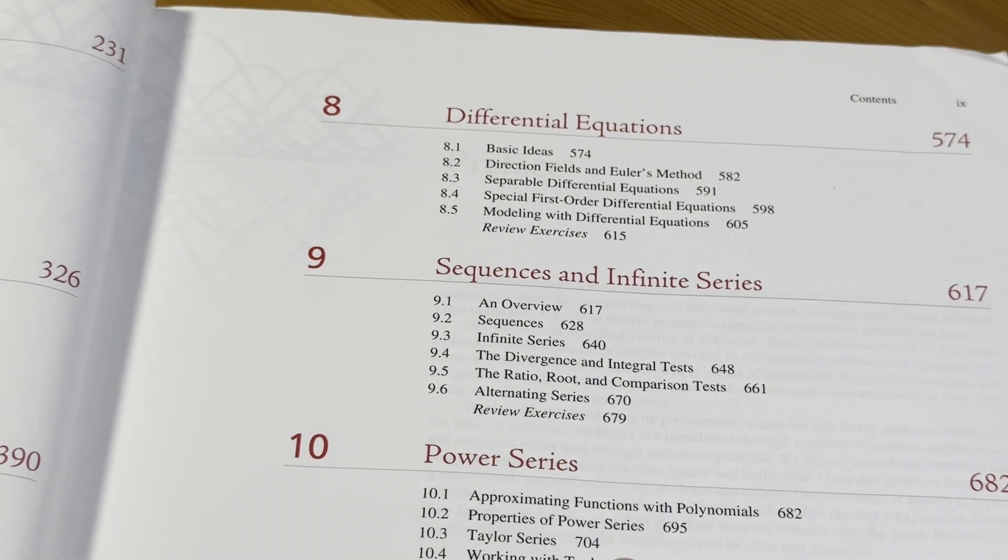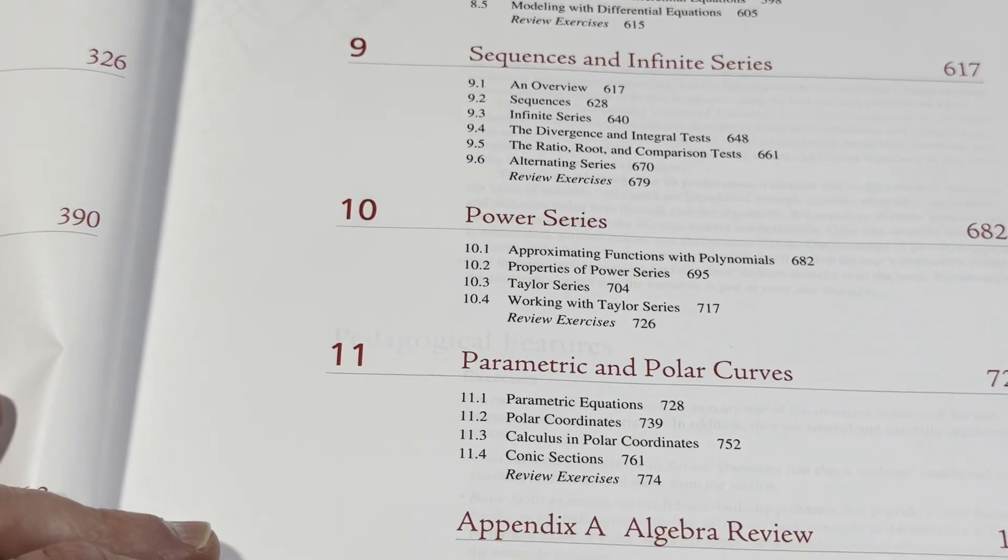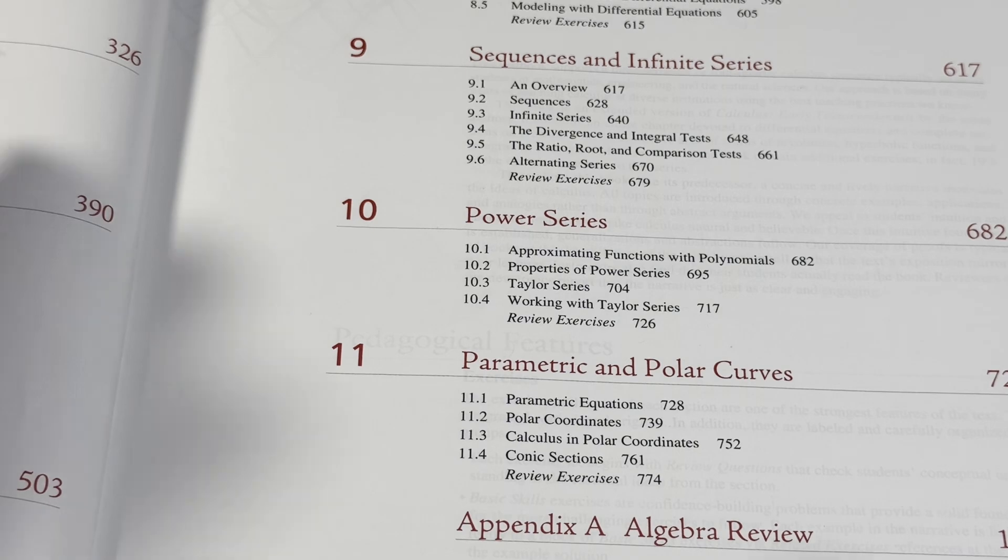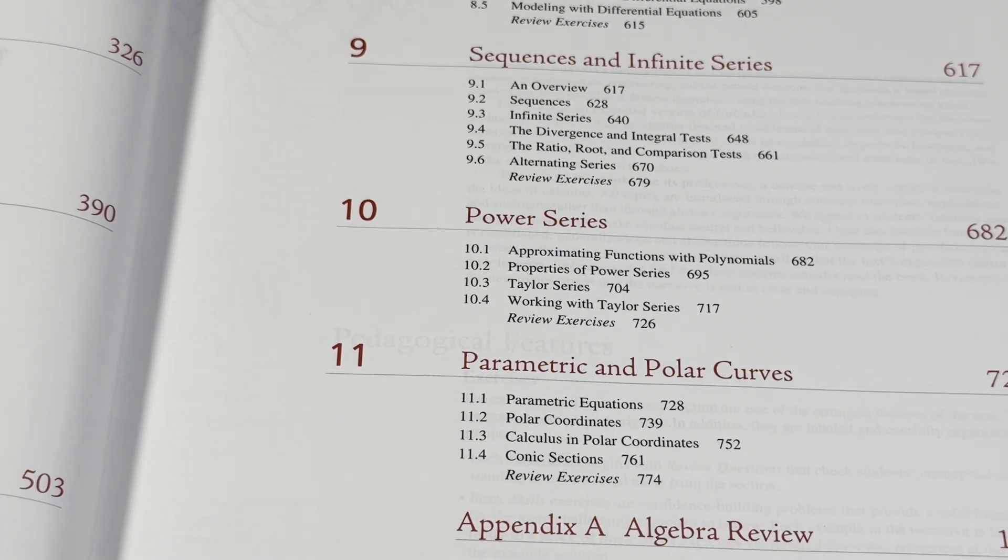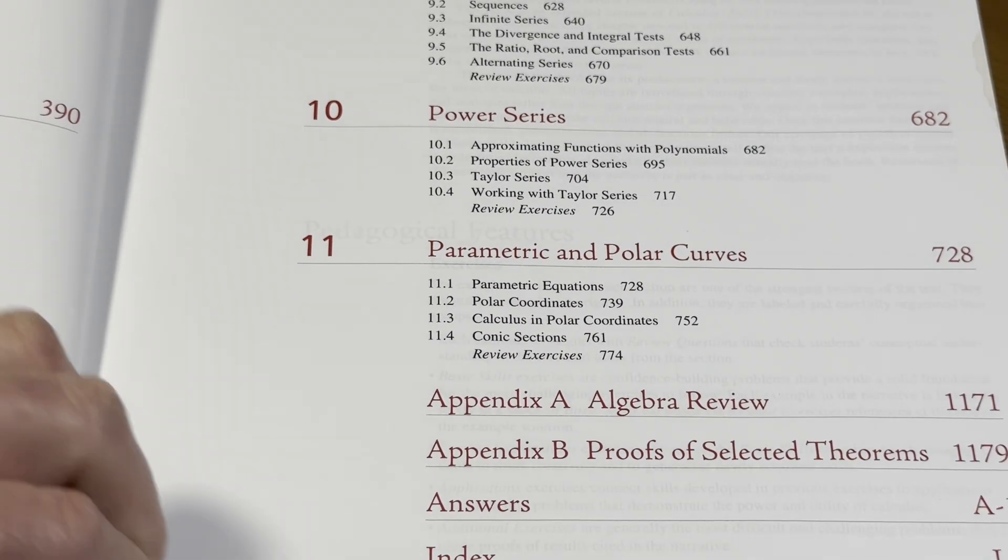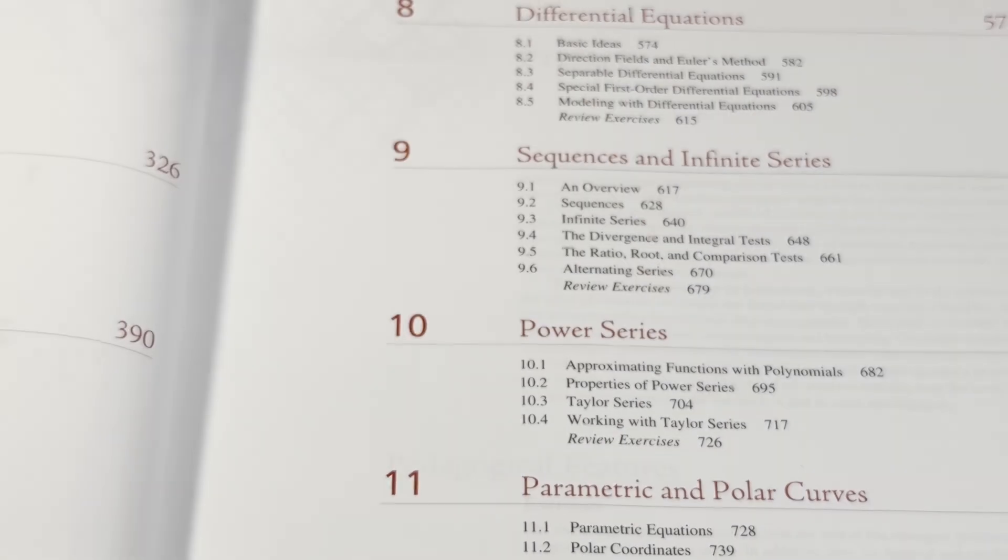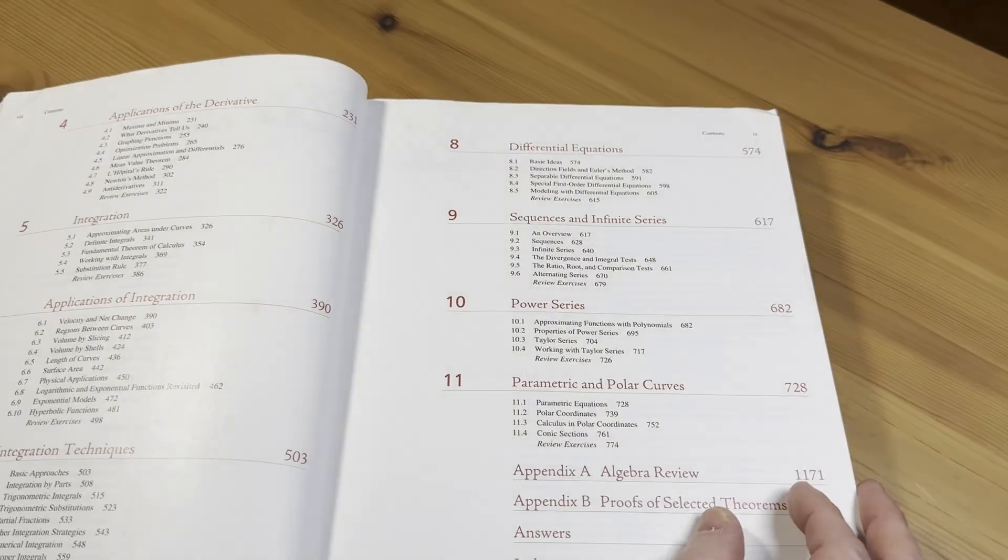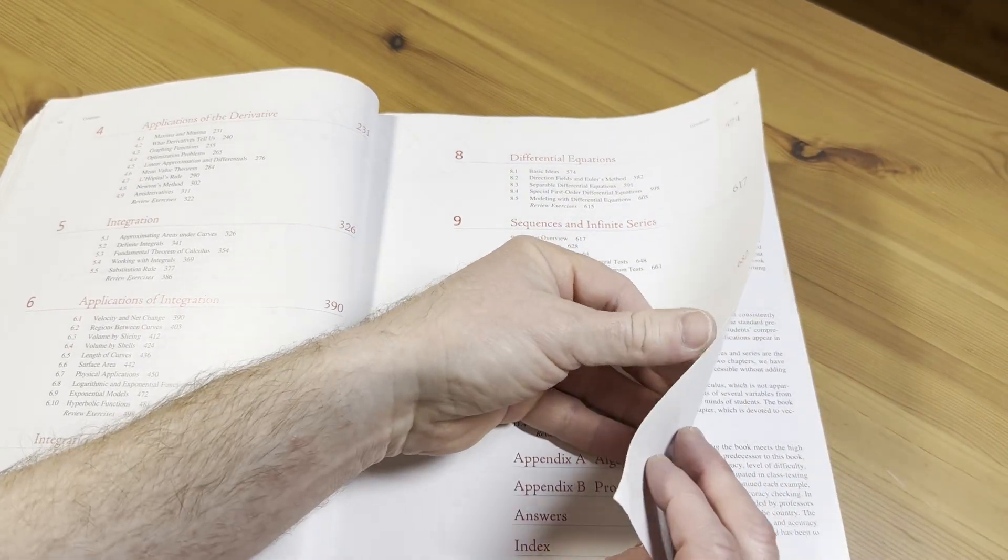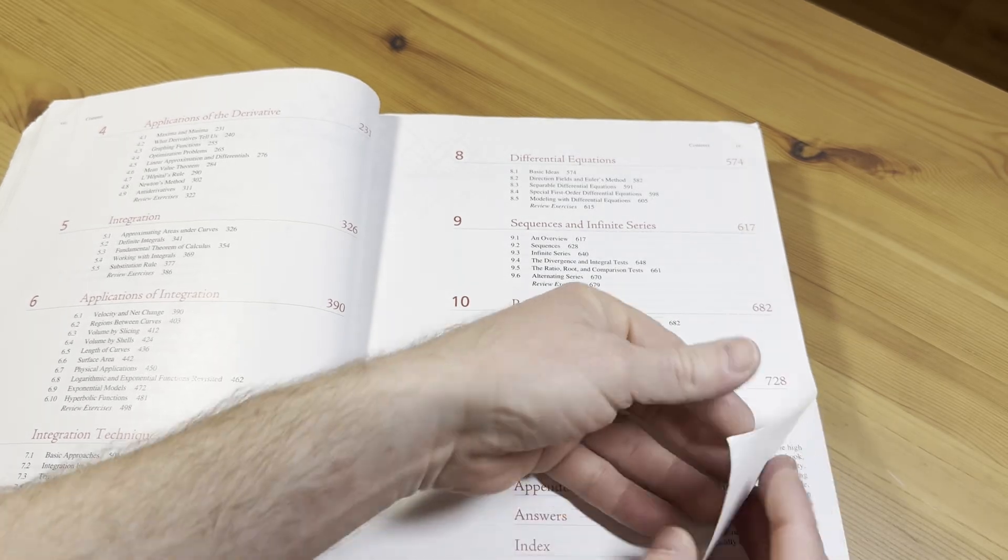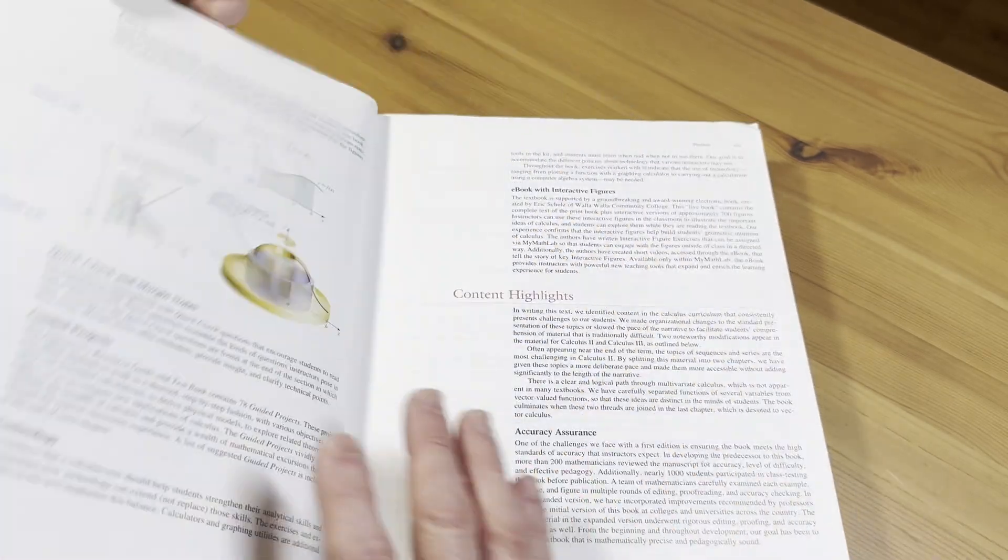Series, this is Calc 2. Calc 2. Parametric and polar curves calculus. So you basically have a Calc 1 and Calc 2 book combined and you have some answers in the back of the book. So really useful. So you basically can't use this for like Calculus 3. But if you have to take Calc 1 or 2 or are taking it, great, great for that.